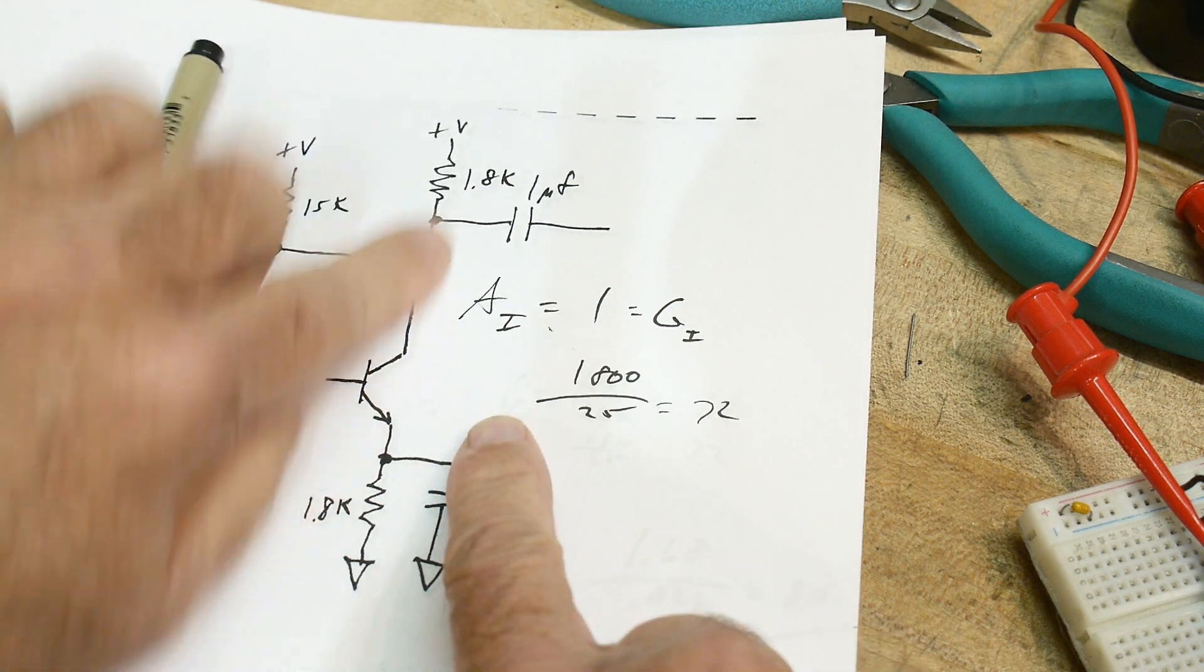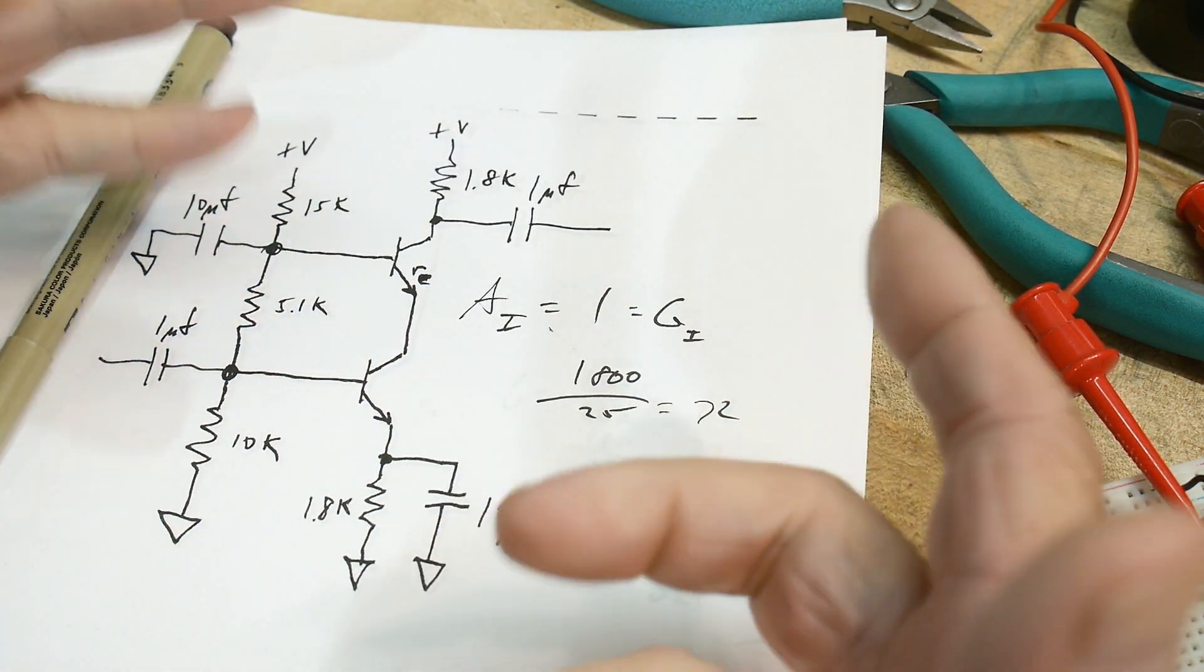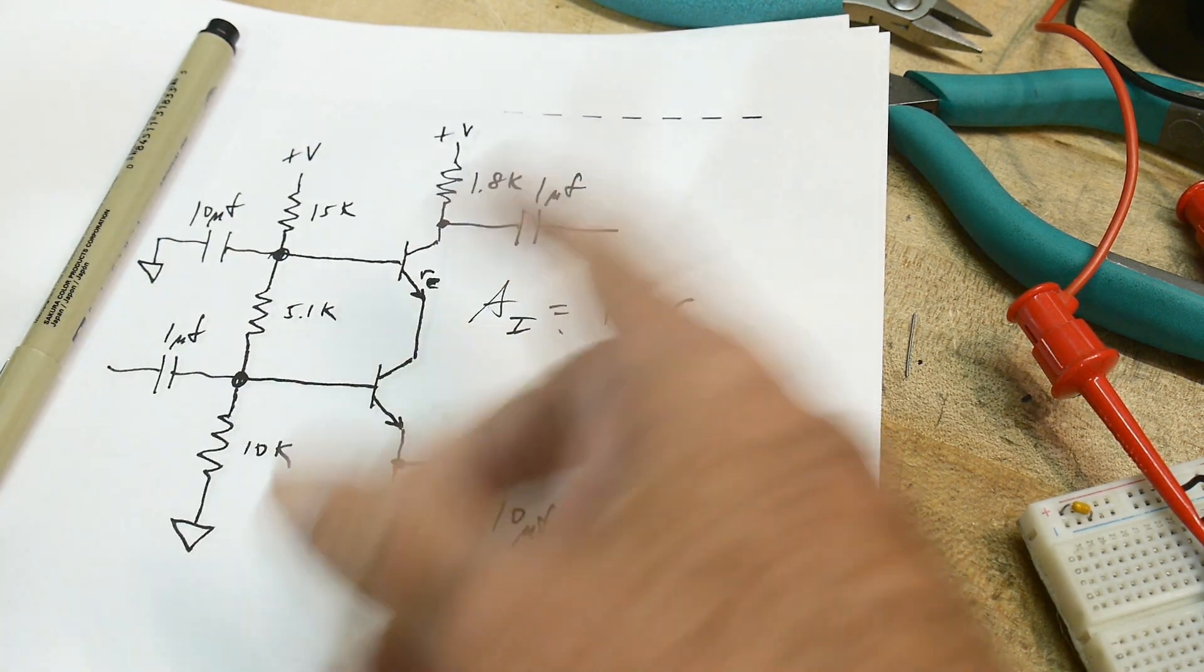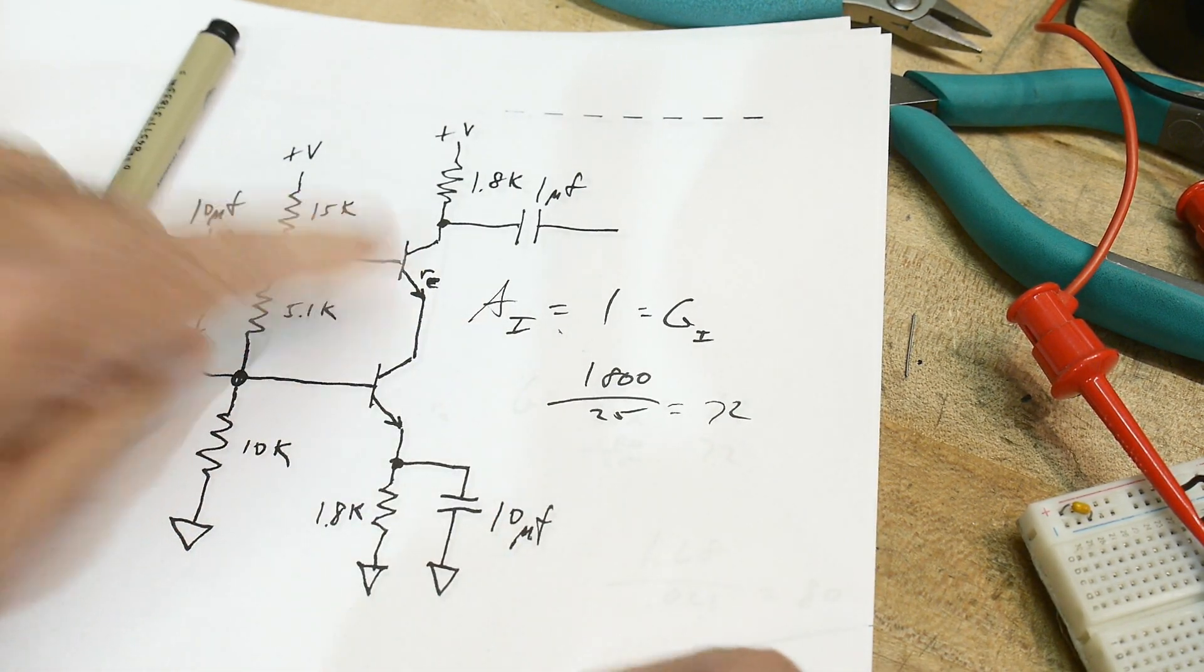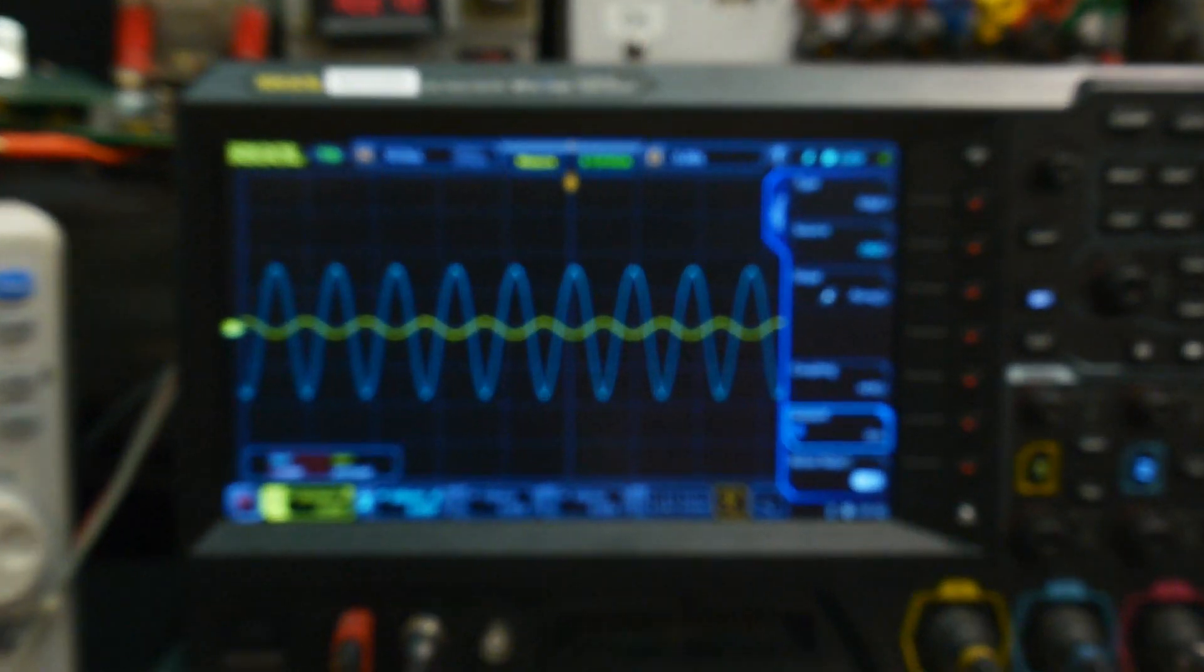Alright, so you calculate it with the same numbers, strangely enough, but it's from an entirely different point of view. This is now a common base amplifier. So let's go back up to our circuit.